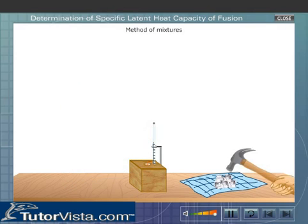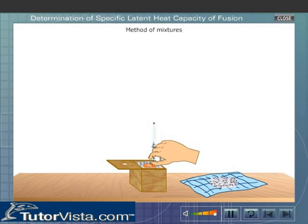Take some ice cubes and break them into pieces. Now introduce the pieces of ice into the calorimeter. Stir the water in the calorimeter gently until the ice melts.